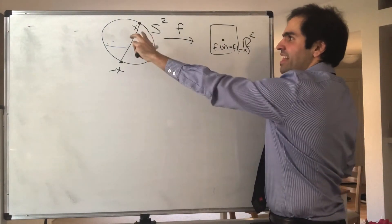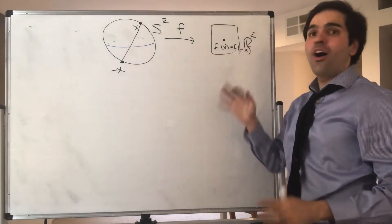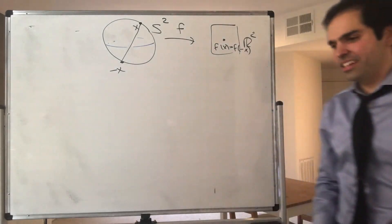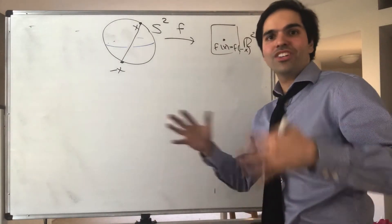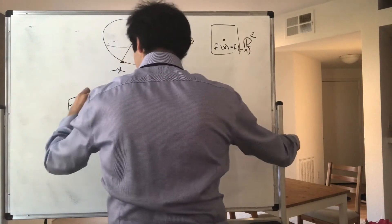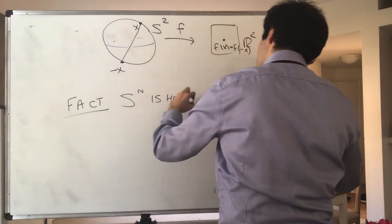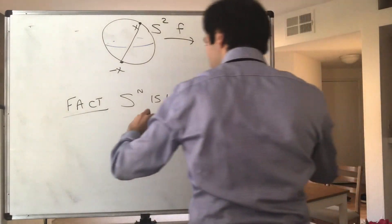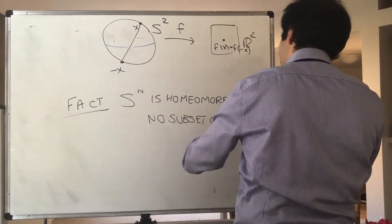That said, however, let me give you a neat application. An application is simply, Sⁿ is homeomorphic to no subset of Rⁿ. So there's no way to deform the sphere, the n-dimensional sphere, to actually get a subset of Rⁿ. So, fact: Sⁿ is homeomorphic to no subset of Rⁿ.